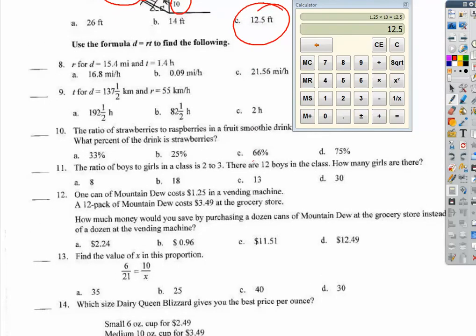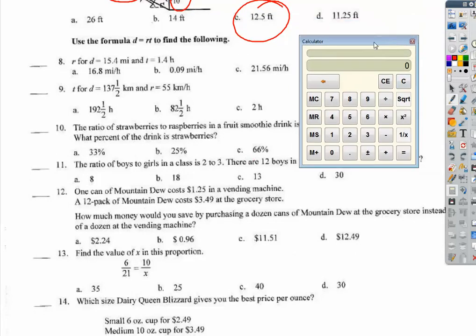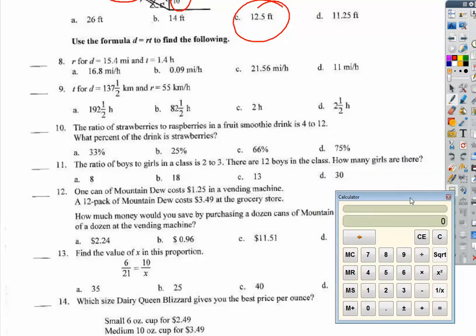Question 8. D for distance is equal to rate times time. So, we're finding the missing piece of that. Find R when D is equal to 15.4 and we have a time of 1.4 hours. Something times 1.4 is 15.4. How would I figure that out? I would divide 15.4 by 1.4 and I get 11. 11 miles an hour.